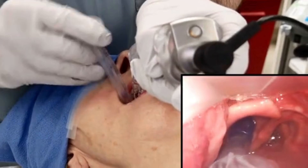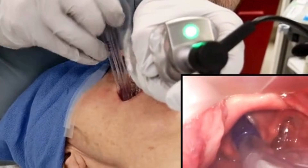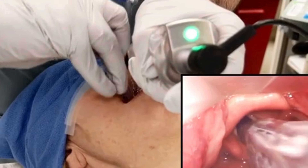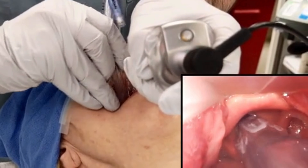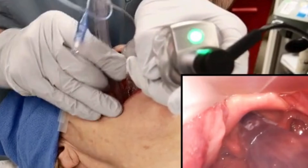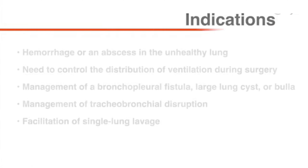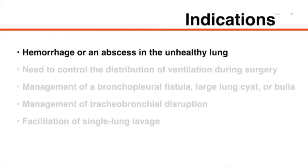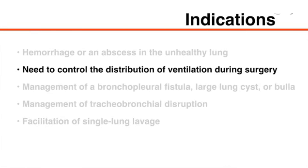Placement of a double lumen endotracheal tube is indicated for prevention of damage or contamination in a healthy lung. Possible causes of such damage or contamination include hemorrhage or an abscess in the unhealthy lung. Other indications include the need to control the distribution of ventilation during surgery.